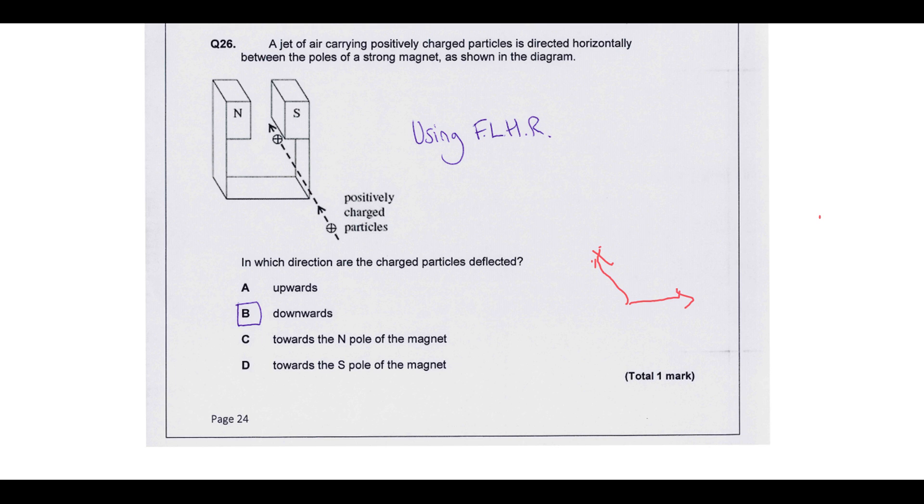So final question. You've got a jet of air carrying positively charged particles directed horizontally between the poles of a strong magnet as shown. In which direction are the charged particles deflected? So we're going to use Fleming's left hand rule. We've got the motion of the positive particles going into the page. We've got the field lines going across the page like that. So by aligning your first finger across the page and your middle finger going into the plane of the page, we can see that the force will be downwards. That's your thumb direction there. So we can see that we'd end up like that.